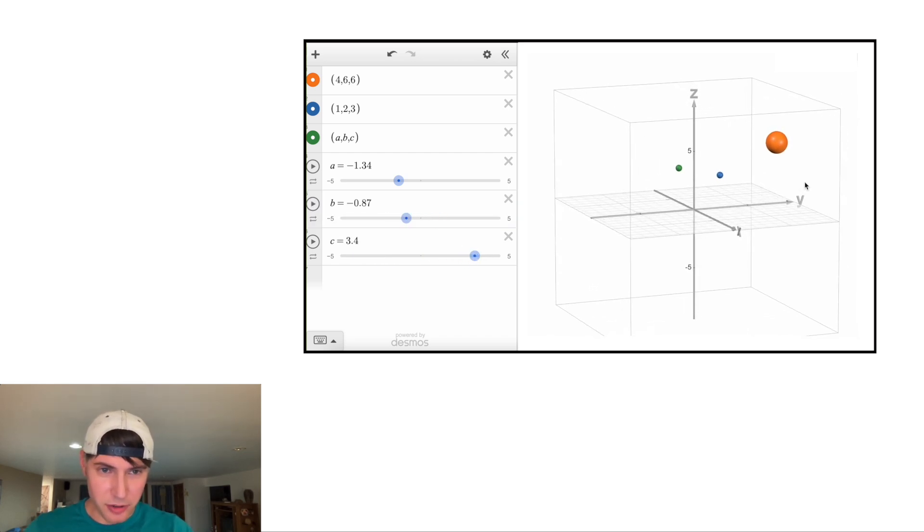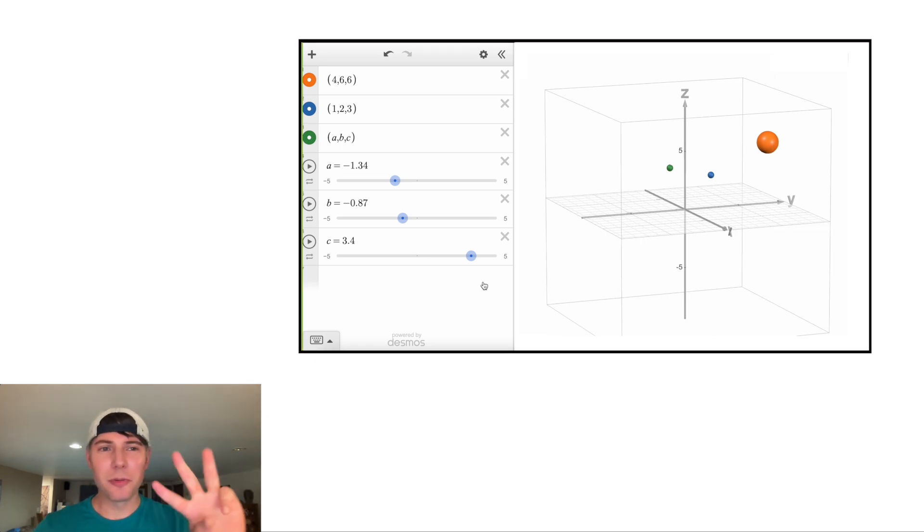So we want to figure out how do we draw those sun rays to those points. Ultimately, the line through these two points and through those two points. If you want to try this on your own, pause it right now, because I'm going to go through it in 3, 2, 1.